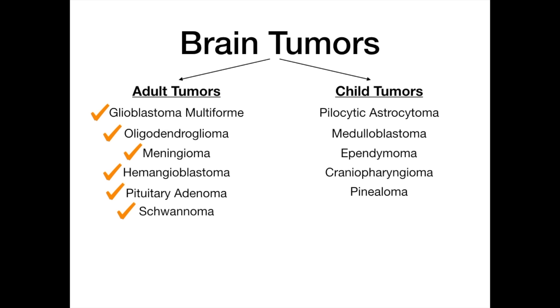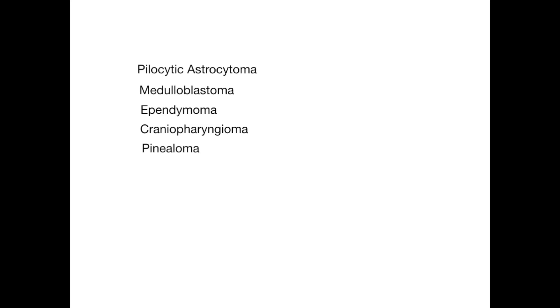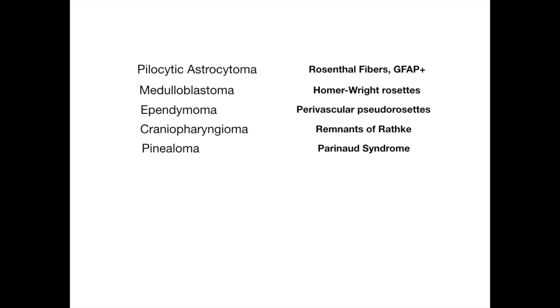That covers all of the adult brain tumors. The childhood tumors are a lot easier — you just need to know one or two buzzwords for each. The tumors are pilocytic astrocytoma, medulloblastoma, ependymoma, craniopharyngioma, and pinealoma. If you know those buzzwords, you are golden on the exam.